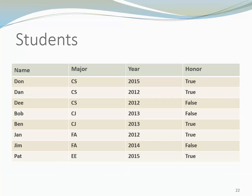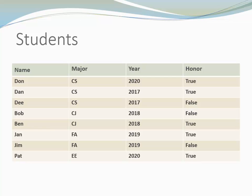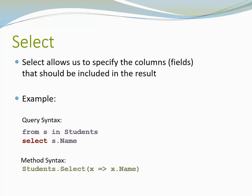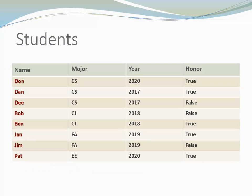Let's look at some examples. Here we have a list of students. Each student has a name, a major, a graduation year, and a field that indicates whether a given student is an honors student or not. LINQ provides a keyword select and a corresponding standard query operator. Select allows us to specify which of the columns or fields should be included in the result. In the examples here, we specified that we are only interested in the names. Here you can see the data returned by the query — it includes the names and only the names of all the students.